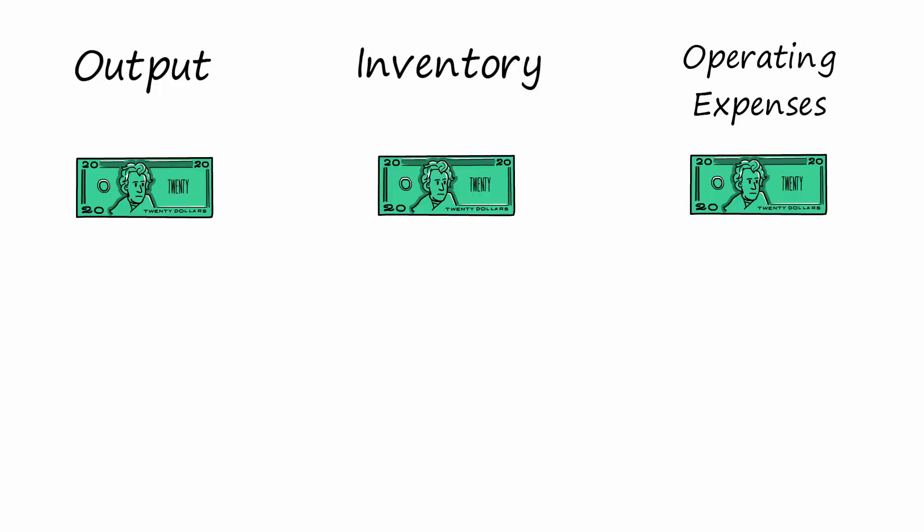Money is involved in each of these metrics. In fact, the output should be measured in money and not in units produced. The inventory is a basic cost of materials and excludes added value during the manufacturing process.